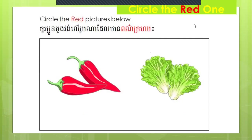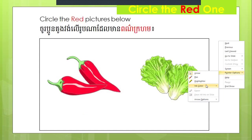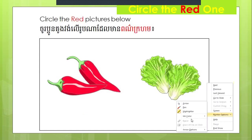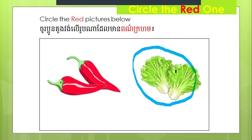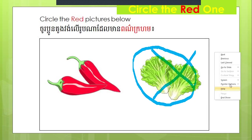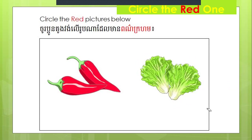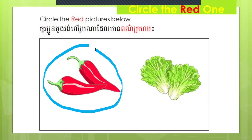Next one — circle the red one. Which one is red: do you think the peppers are red or the spinach? It says circle the red pictures below. Can we circle this one? No, these are not red — they are green. So we erase it. Which one is red then? You are right — the red peppers. These are red.